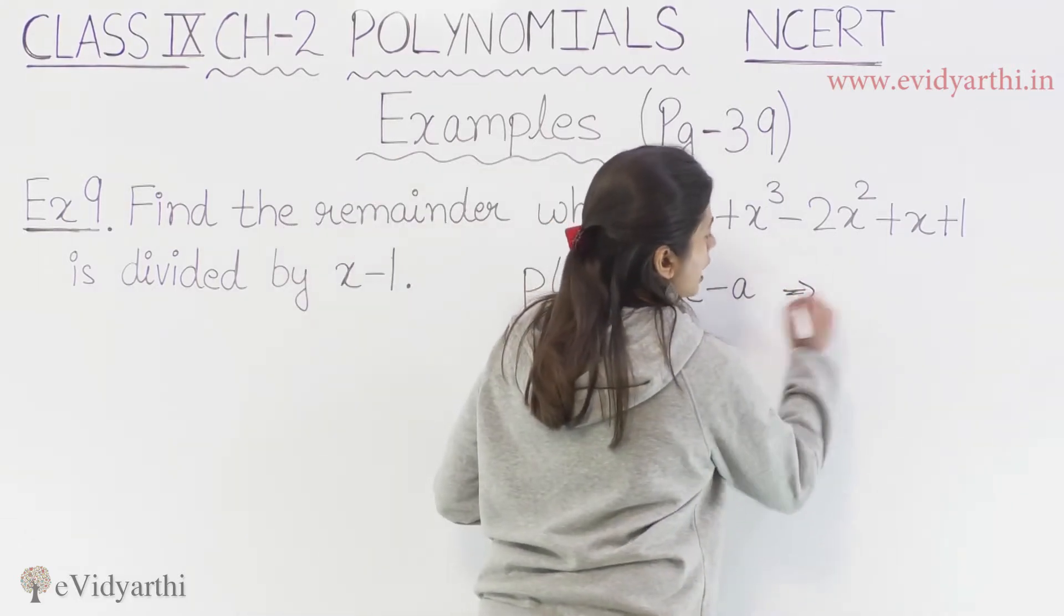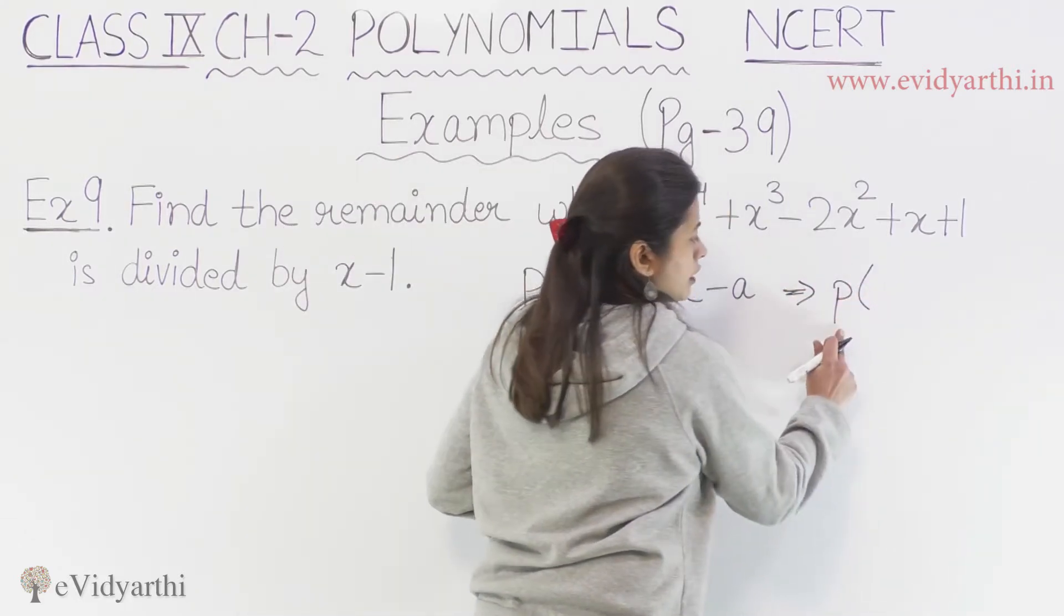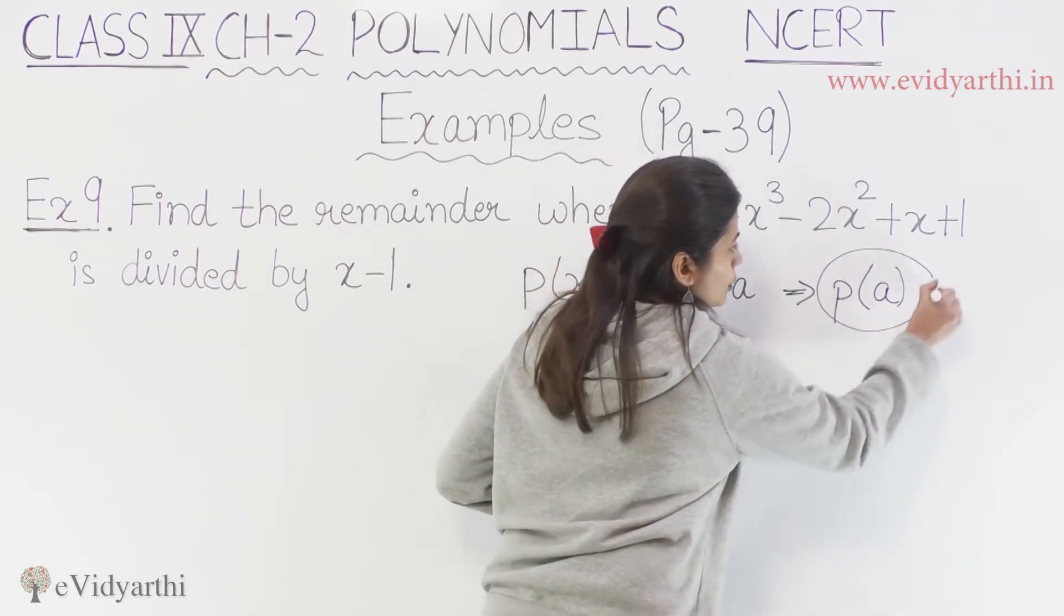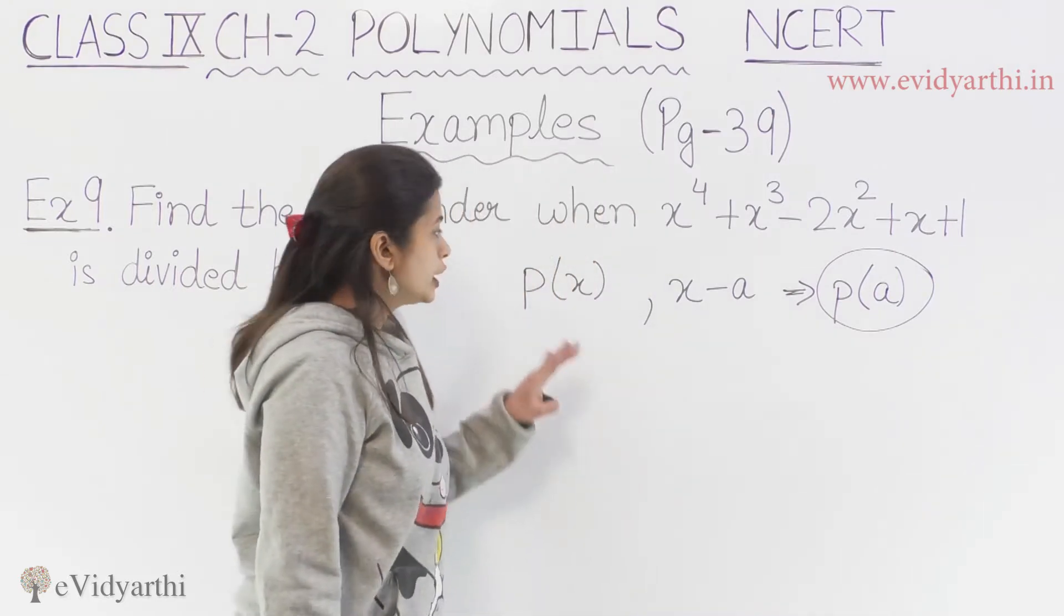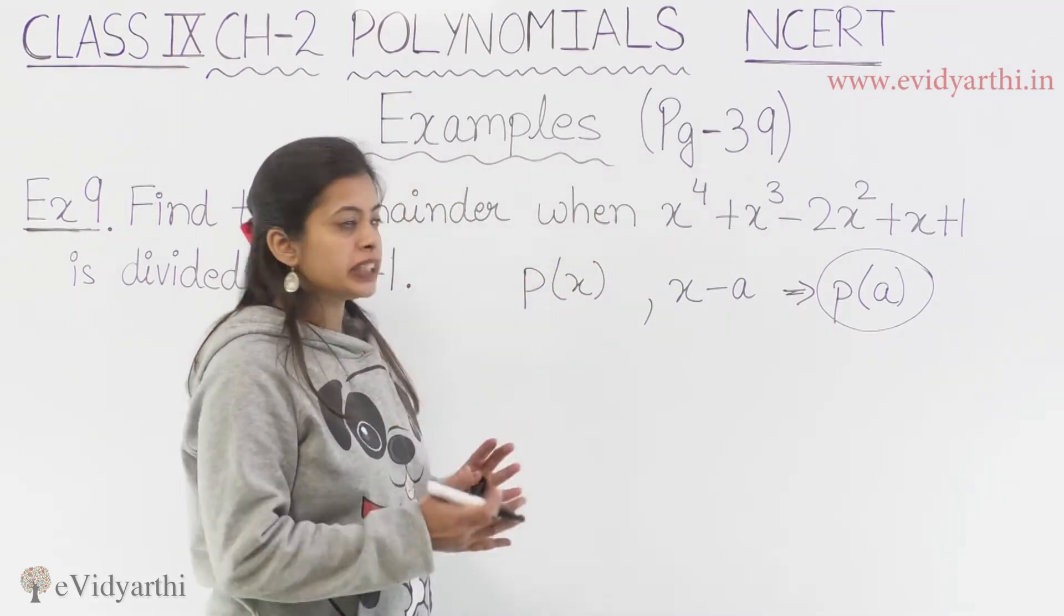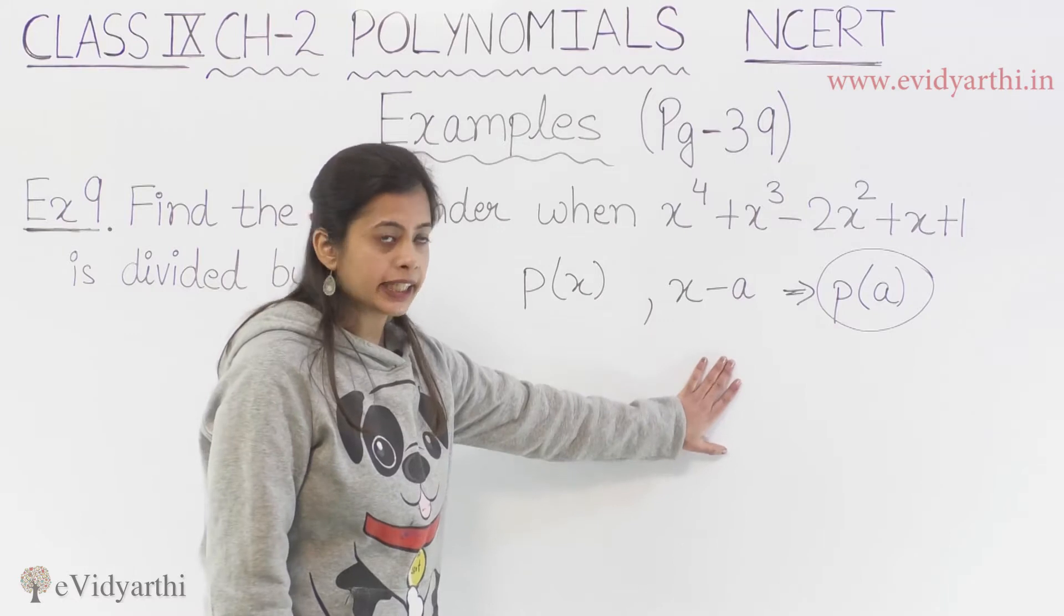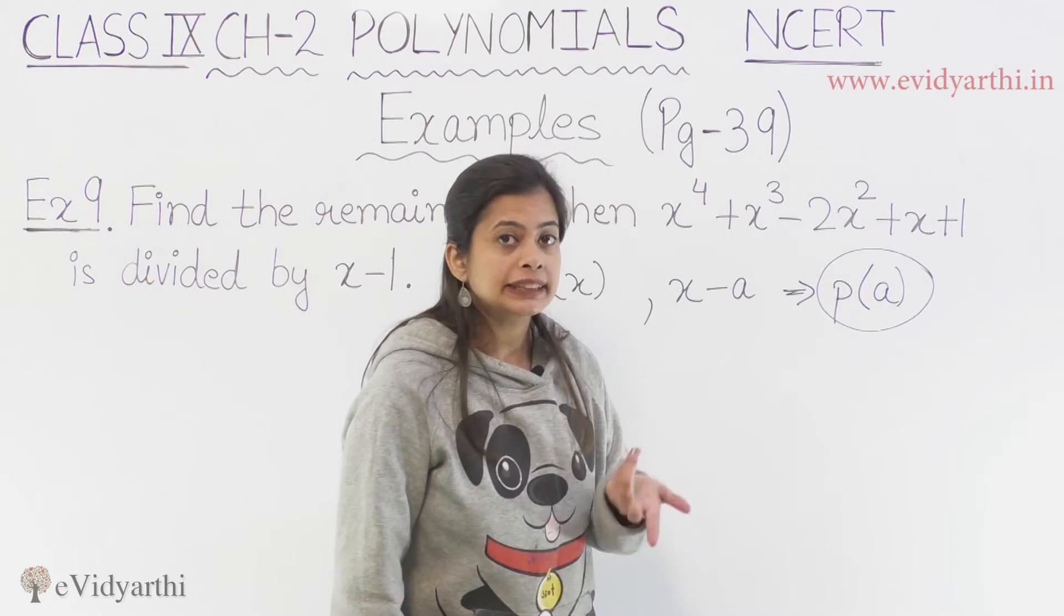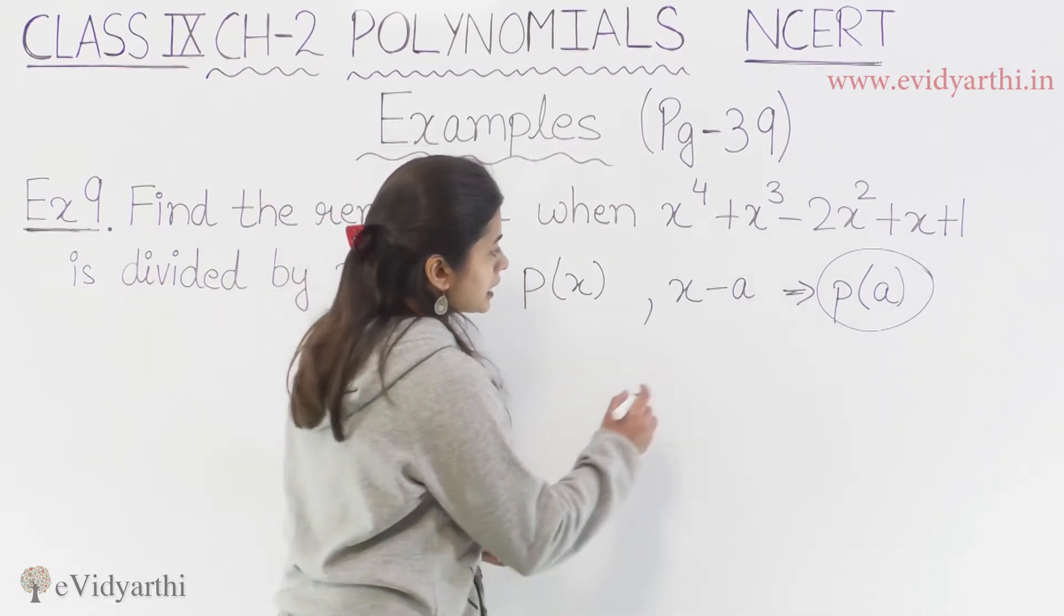Ultimately, agar hum p ki value apne polynomial ko a ke saath find out karte hai, so this would be our remainder. So if a polynomial is being divided by x minus a, p(a) would be the remainder. Abhi p(a) hum ne kaisa nikala? Hame ultimately karna kya hai?